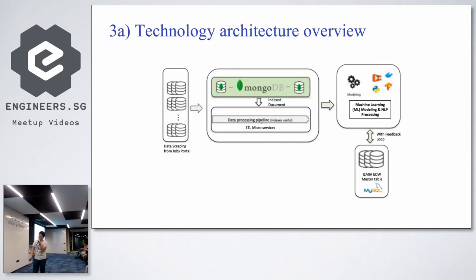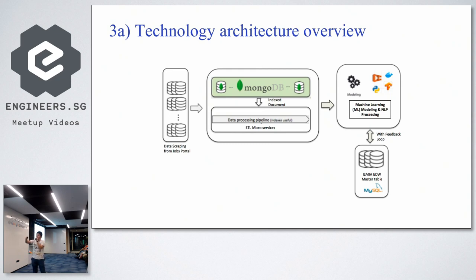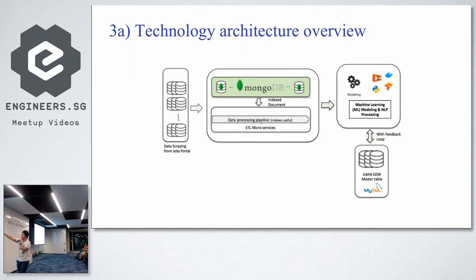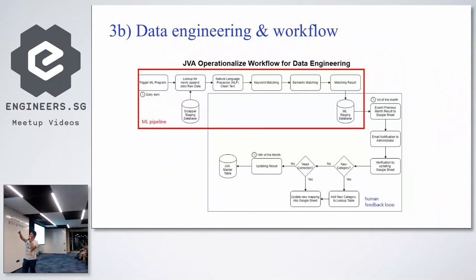Here is our simplified architecture — everything is hosted on Google Cloud. We have data scraping from all job portals using Python Selenium, and we pass the results to MongoDB because MongoDB is good for unstructured data. But because the end users need easy querying, we index the documents and pass them back to SQL. Our data processing pipeline uses microservices and cloud functions, and results are passed to the machine learning model. The other part is the feedback loop — the human-in-the-loop design.